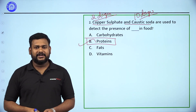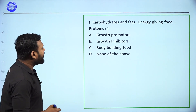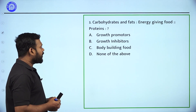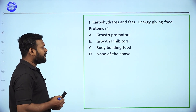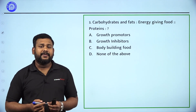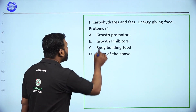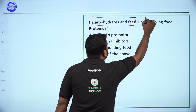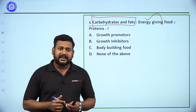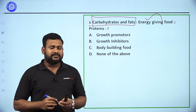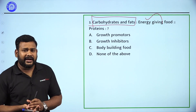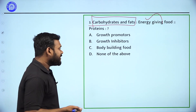Next question: Carbohydrates and fats — what are they called? Options: growth promoters, growth inhibitors, body building food, none of the above. Carbohydrates and fats are called energy giving food. Proteins are called body building food. So the correct answer is body building food for proteins.